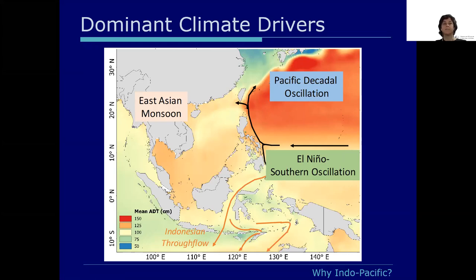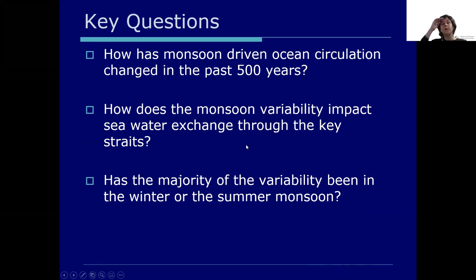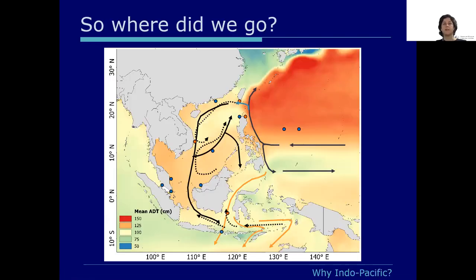The key questions we want to ask are: how has monsoon-driven ocean circulation changed in the past 500 years? How does monsoon variability impact seawater exchange through these sea passages? Has the majority of variability been in the winter or summer monsoon? By looking back over the past 500 years, we hope to better understand how things might change in the next 500 years as we've changed Northern Hemispheric climate temperatures.